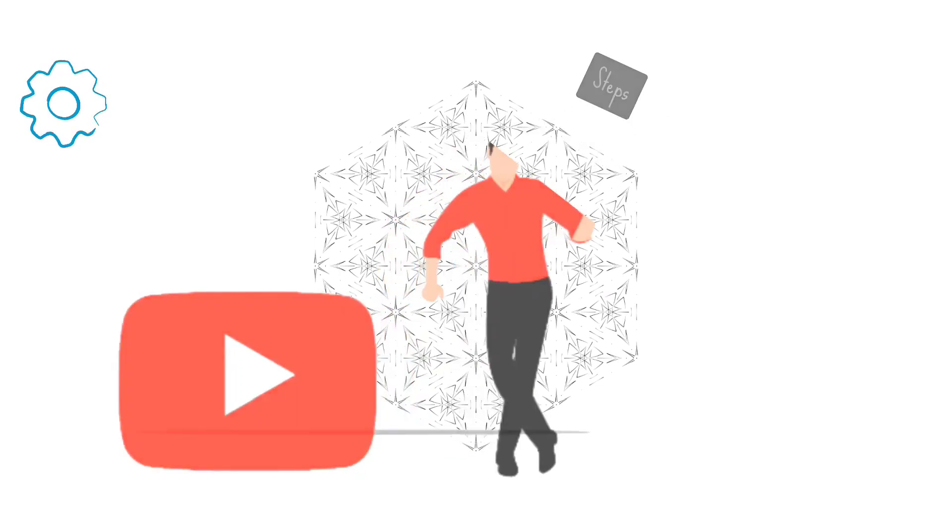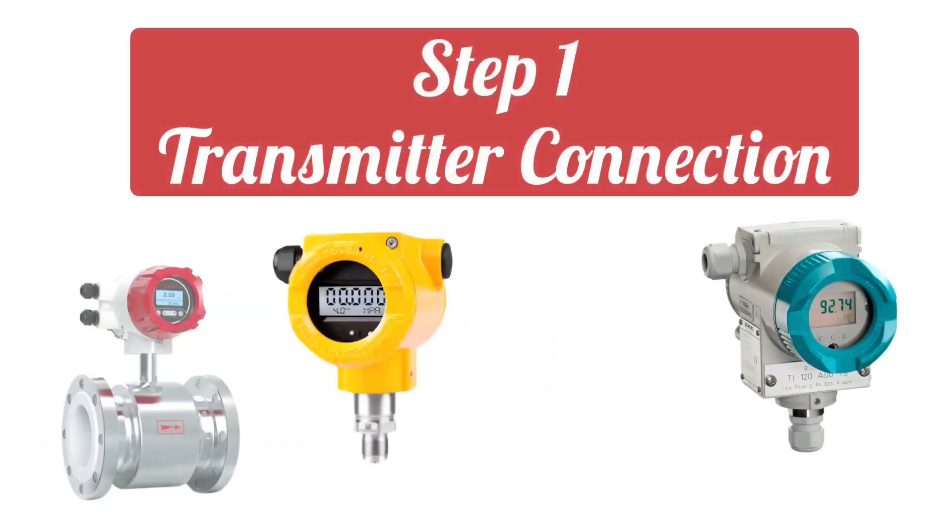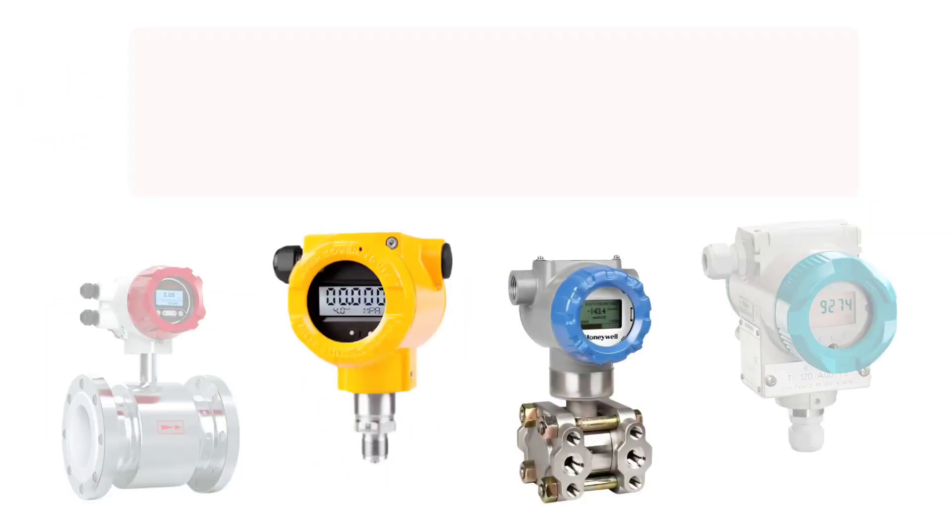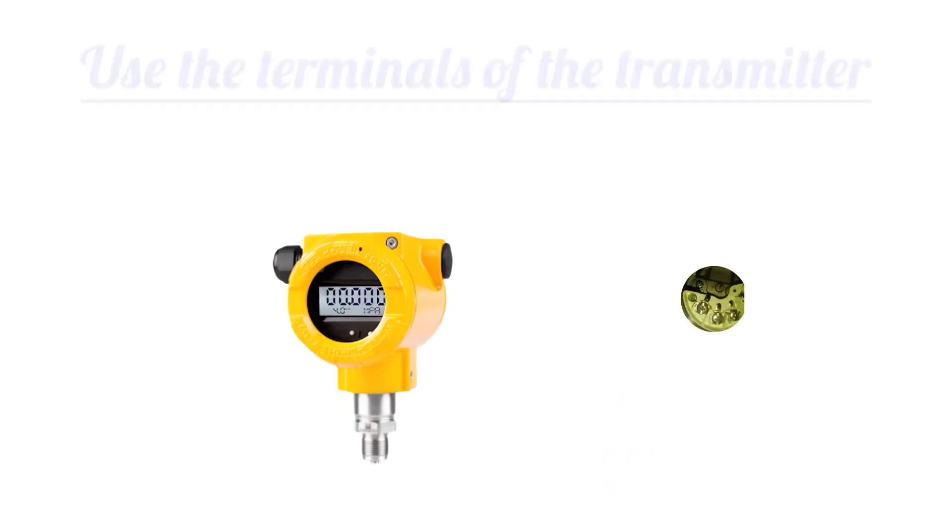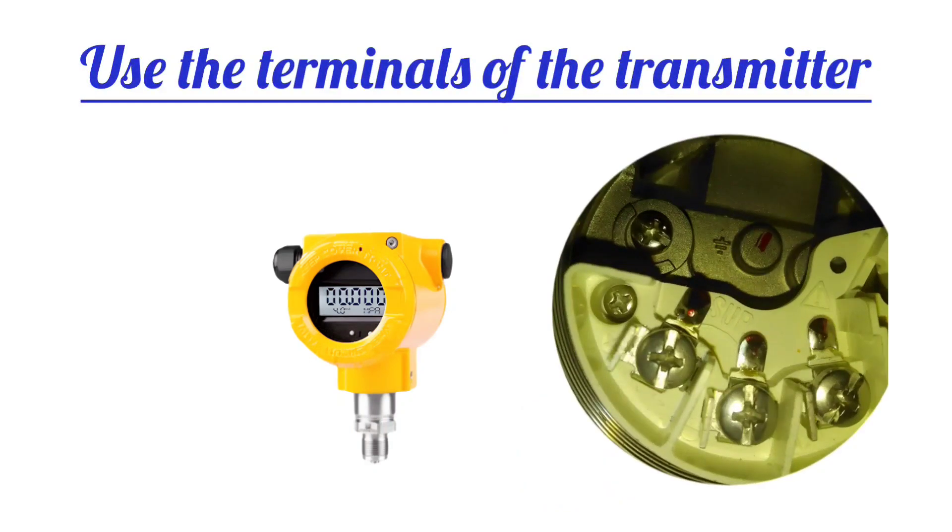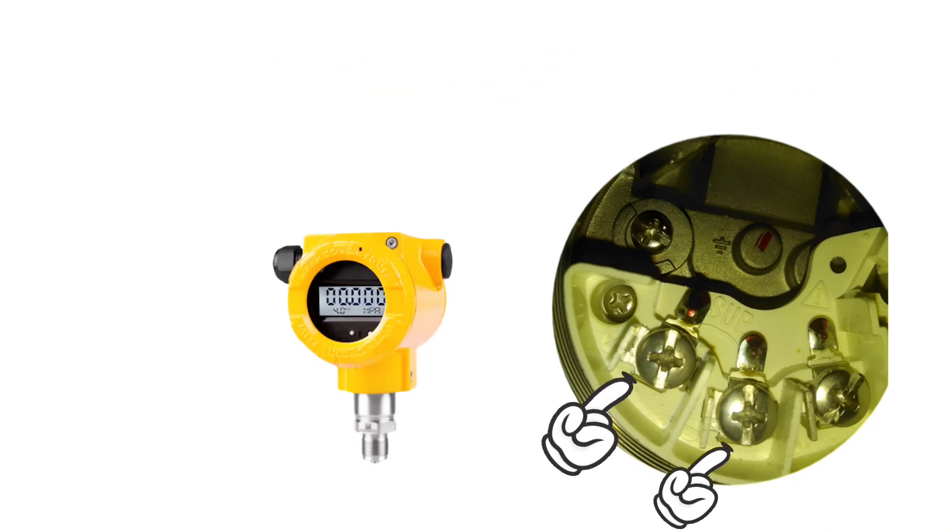Let's start it. The first step is transmitter connection. First of all, connect the pressure transmitter to the PLC. For this, you will have to use the terminals of the transmitter. Typically, the pressure transmitter or any other transmitter has two terminals, one positive and one negative.